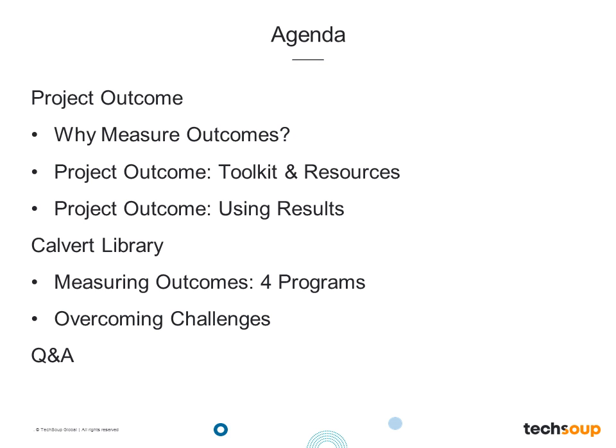We'll start off today by hearing from Samantha, who will share information from Project Outcome, a free set of tools and resources for public libraries. She'll talk about why measuring outcomes — not just outputs — is important for libraries, then share the Project Outcome toolkit and ideas for how you can use outcome data. Then Robin will share her experience measuring outcomes at the Calvert Library across four programs, and how they overcame challenges. We're focusing on smaller libraries today, but large libraries can also apply these concepts. The toolkit is available to public libraries in the US and Canada.